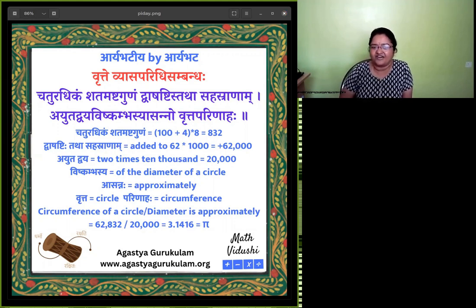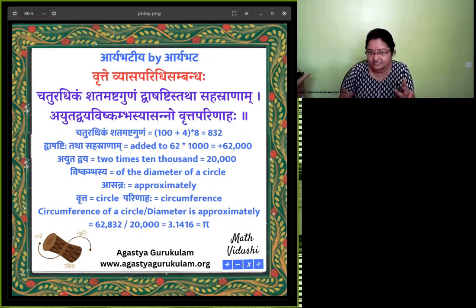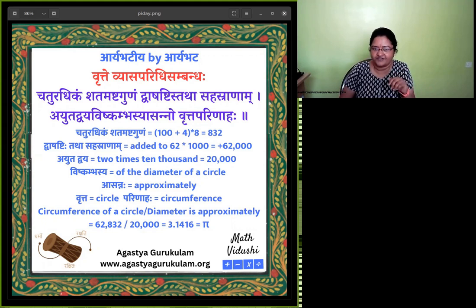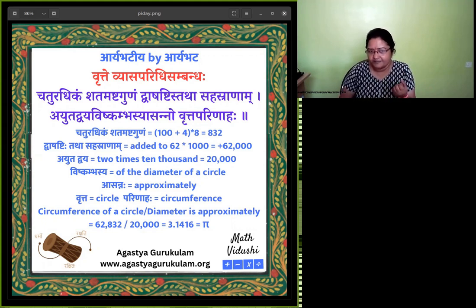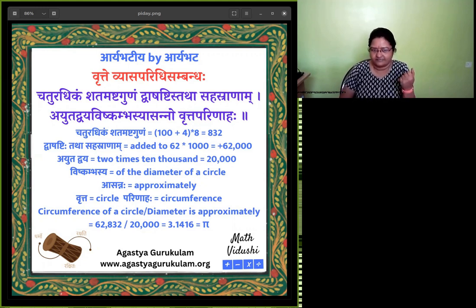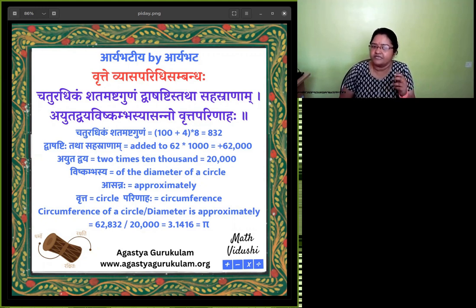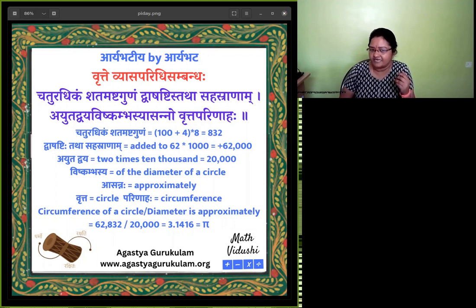He says: Vritta Vyasa Paridi Sambandha. Vritta means 'of a circle', Vyasa is the diameter, and Paridi is the circumference of the circle. So what is the sambandha — the relationship — between the diameter and the circumference? He gives the formula: Chaturadikam Shatam Ashtagunam Dvashashti Tatha Sahasranam Ayutadvaya Vishkambhasya Asanno Vrittaparinaha.